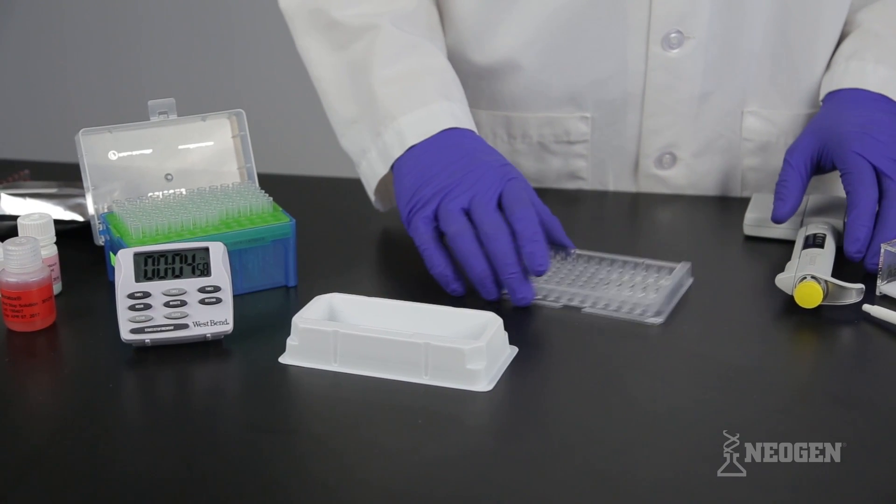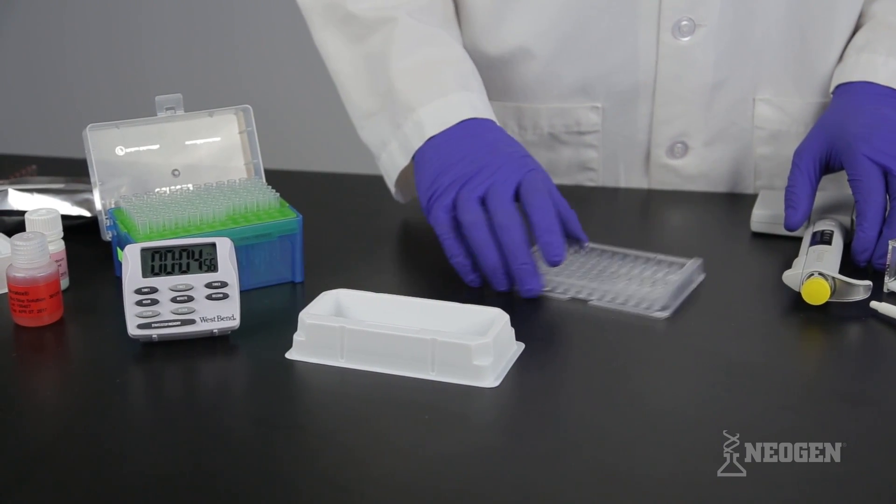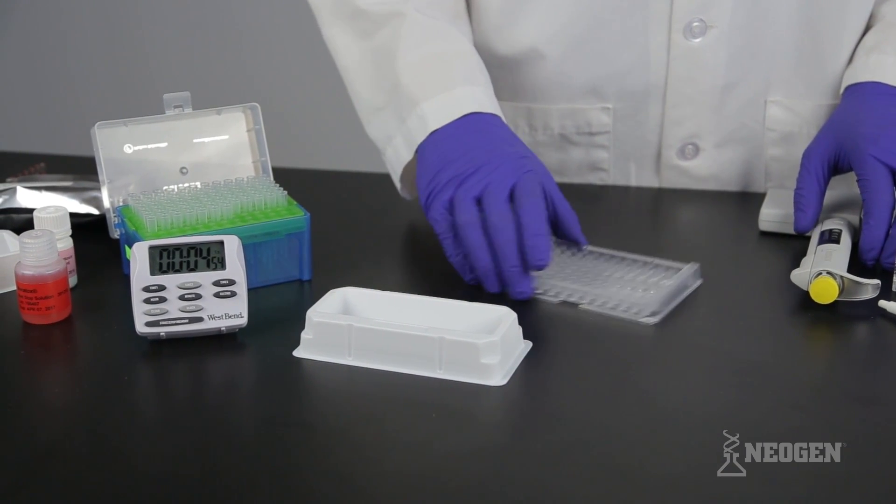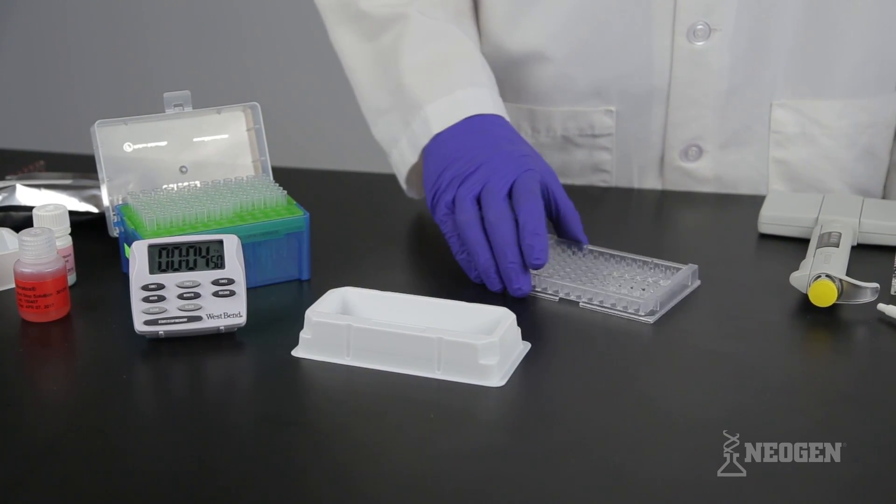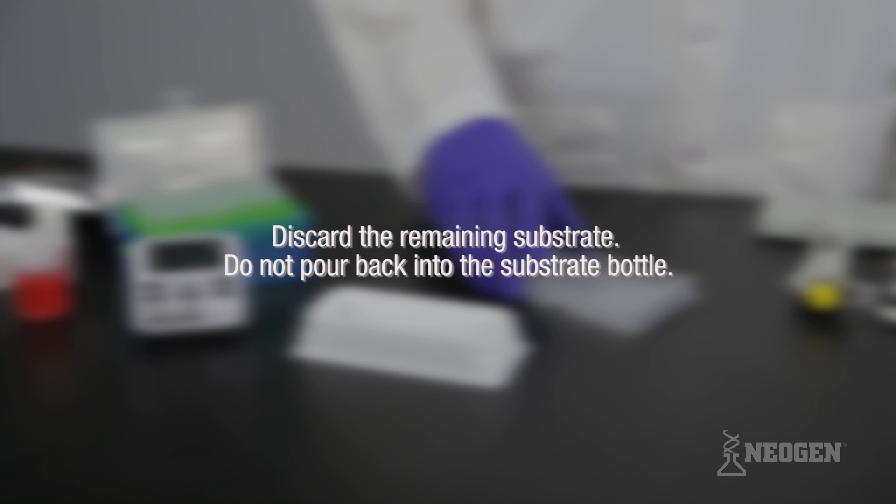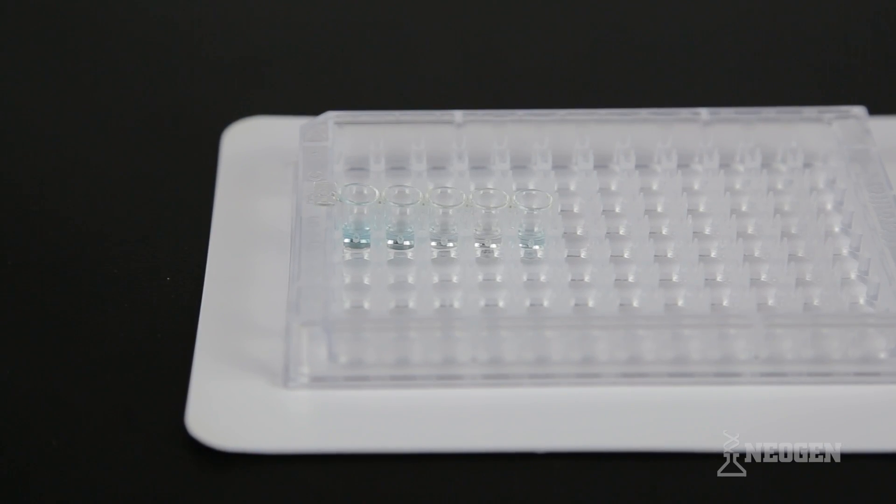During the first 30 seconds of room temperature incubation, mix the wells by sliding the microwell holder back and forth on a flat surface without splashing reagents from the wells. Discard the remaining substrate. Do not pour back into the substrate bottle. The liquid in the wells should change from clear to shades of blue.